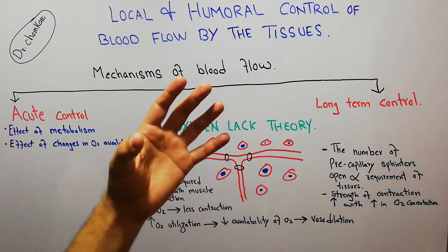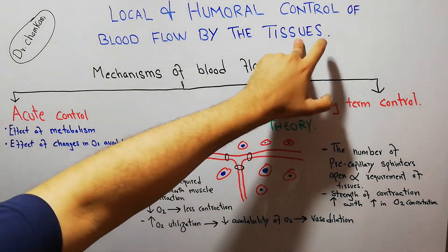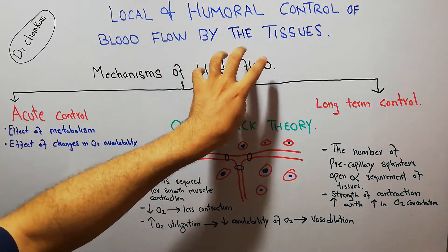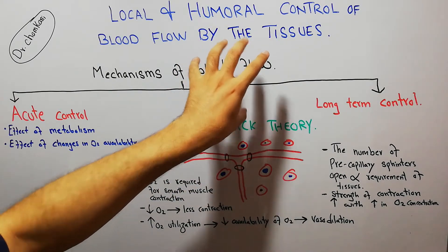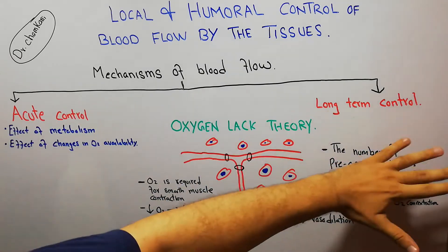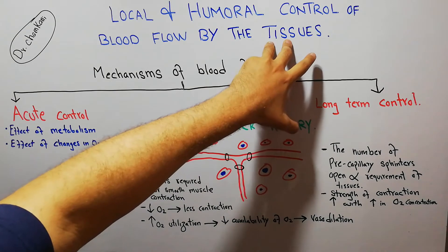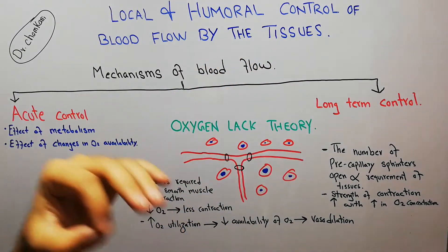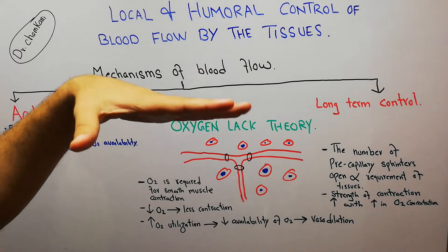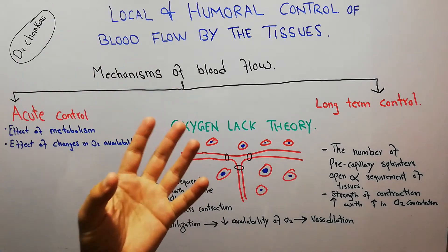As discussed in previous lectures, the tissues themselves have an important role in the control of blood flow, mainly through two mechanisms: acute control and long-term control. Each organ of the human body receives a different amount of blood, and that amount changes according to the needs of the body.